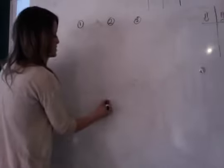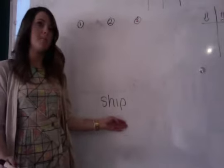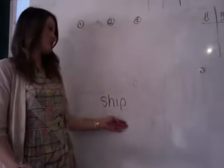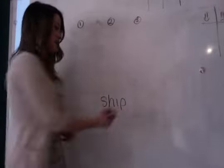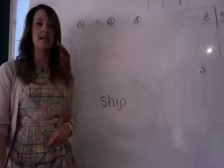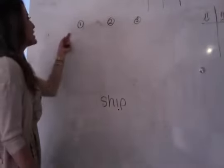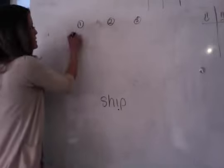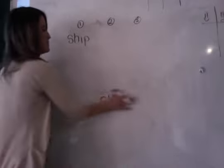Our first word for this week is the word ship. Say ship. Now let's say the sounds for ship: Sh, I, P — ship. This one letter right here is saying I. We're going to write that under our first column. Say and write ship under column one: Sh, I, P — ship. Now let's dot and dash: Sh, I, P — ship.